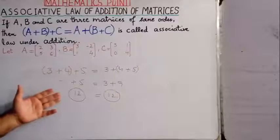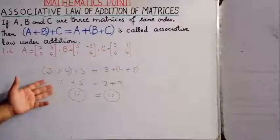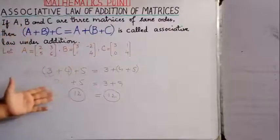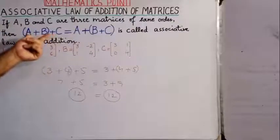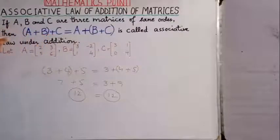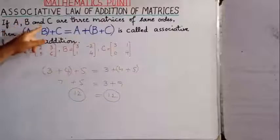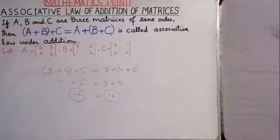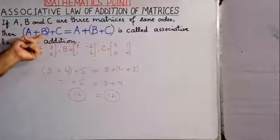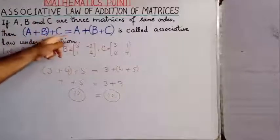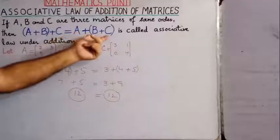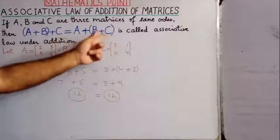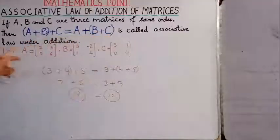If we apply the same law to matrices: if A, B, C are three matrices of the same order, then (A + B) + C is equal to A + (B + C). This is called the Associative Law of Addition.